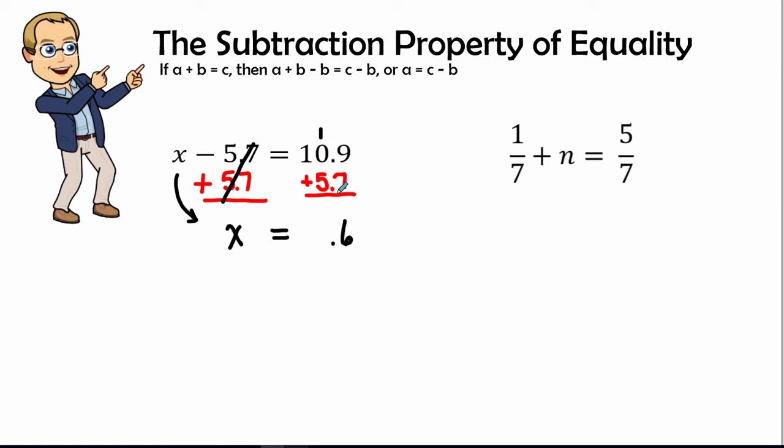5 plus 0 is 5, plus 1 is 6, so 16.6 is our answer. When we check our work, wherever we see our variable, we write 16.6.